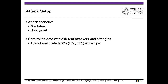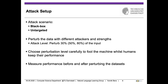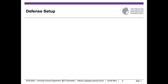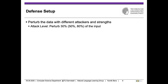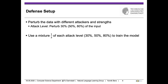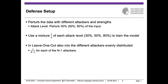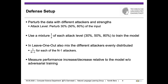We measured the performance before and after perturbing the dataset and compared them. For the defense setup, we use the same data as the attack setup with three different attack levels, mixed evenly distributed by attack level — one third of each attack level — to build one large defense dataset to train the model on. In the leave-one-out setup, we also mix the different attackers evenly distributed, so one part of each attacker except the one being evaluated against is in the final defense dataset. We measure performance increase and decrease relative to the unshielded model's performance.